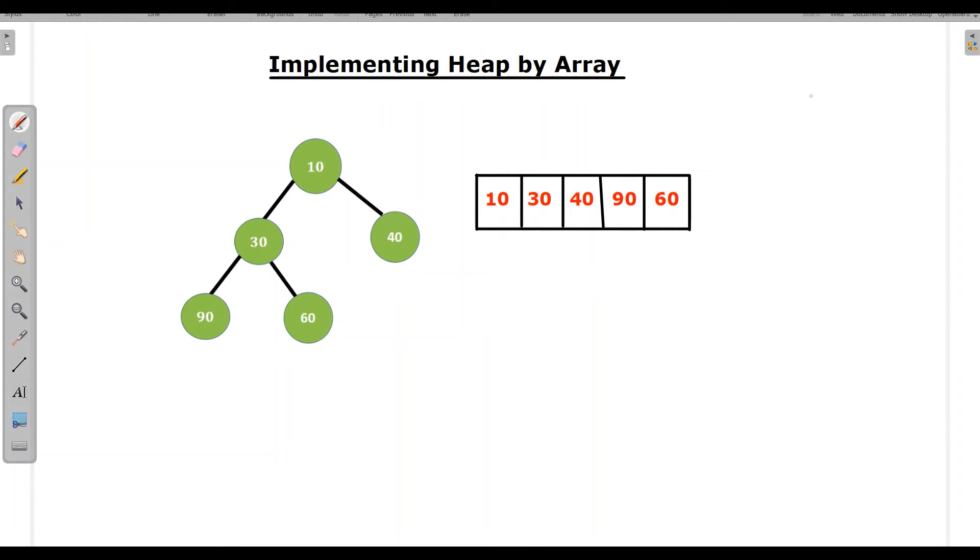Heap can be implemented by two ways, linked list as well as with array. But implementing heap by linked list takes more memory. So we usually use array. So it works on the rule. If root is i, then left child will be 2i and the right child will be 2i plus 1. So here also 2i plus 1.